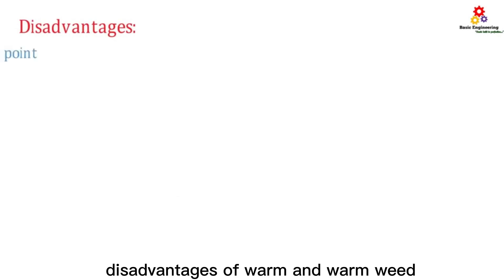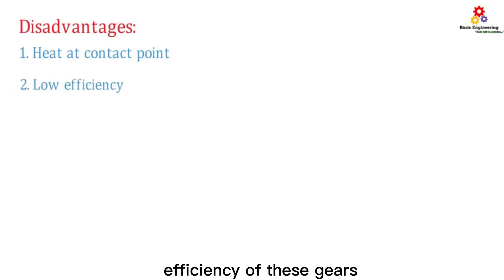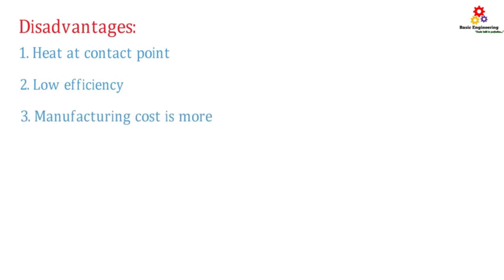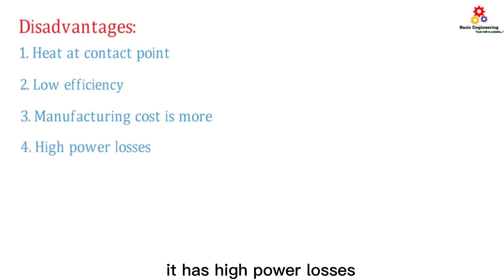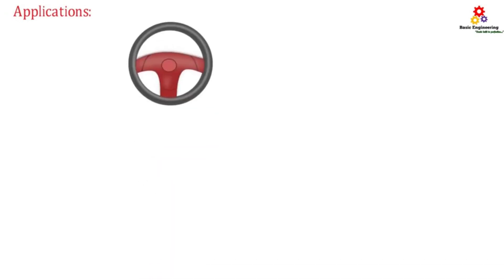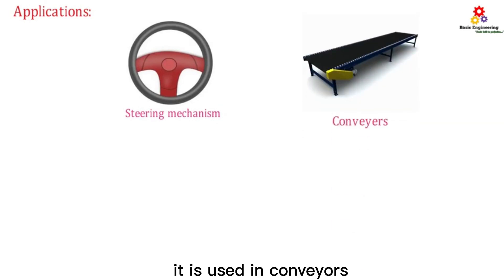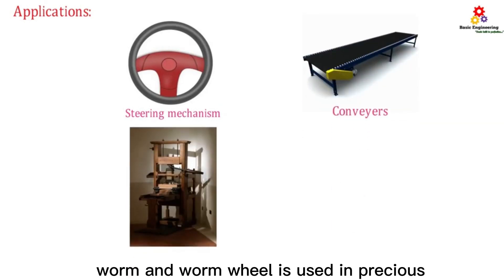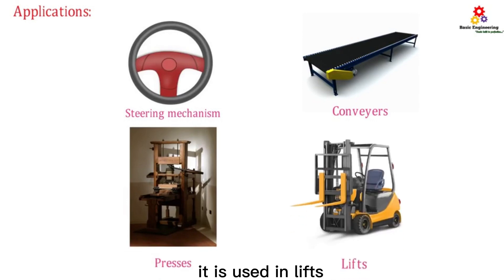Disadvantages: This gear pair produces heat at the contact point. Efficiency of these gears is low. Manufacturing cost is more compared to bevel gears, and it has high power losses. Applications: It is used in steering mechanisms in automobiles, in conveyors, in presses, and in lifts.